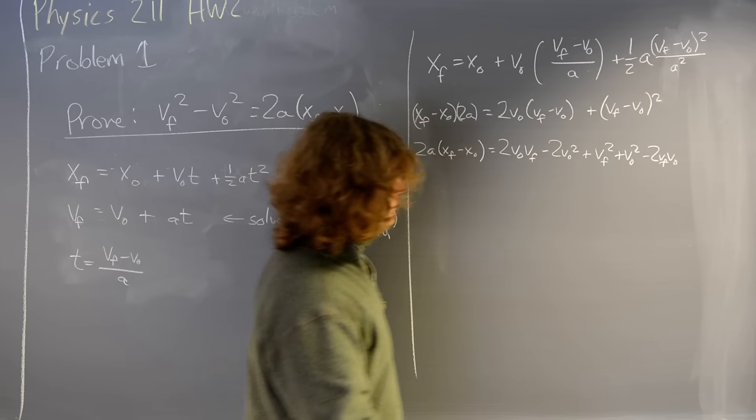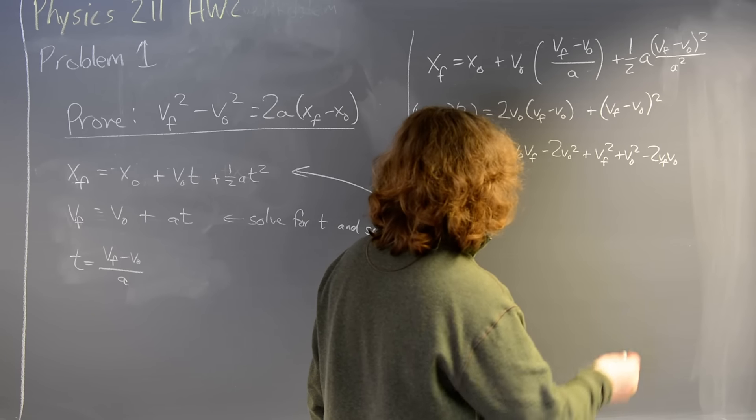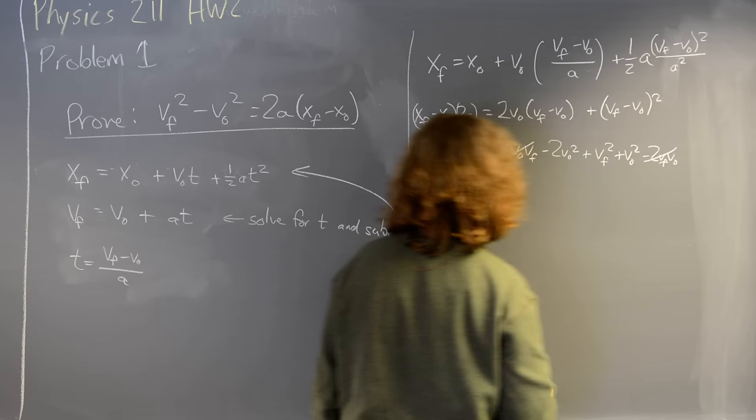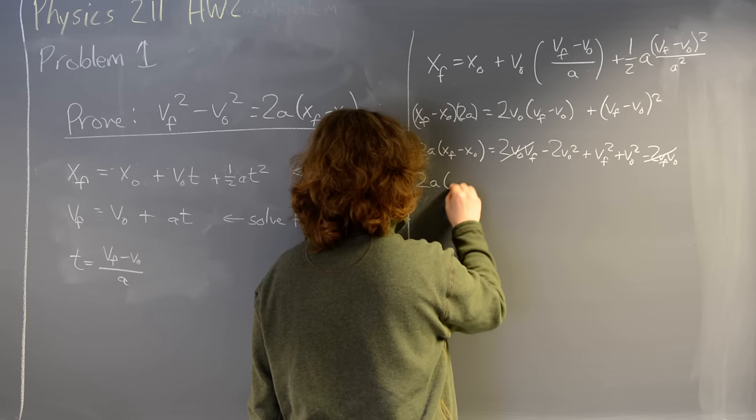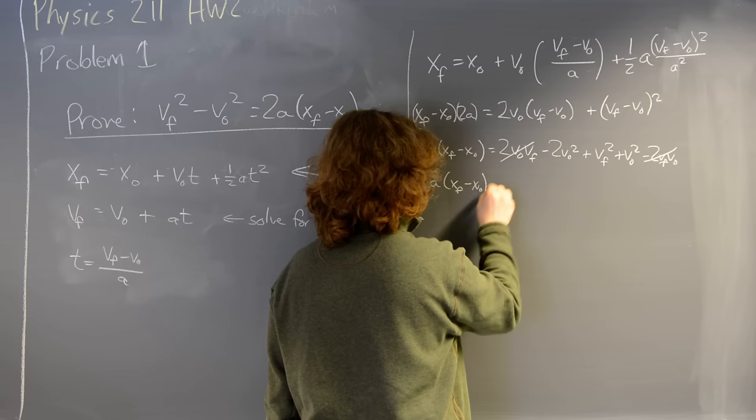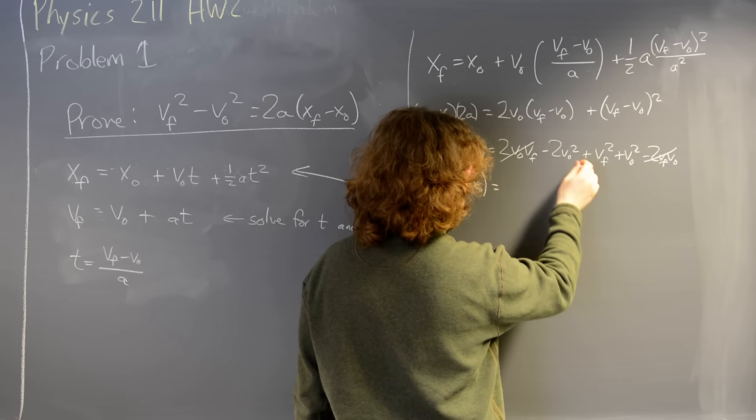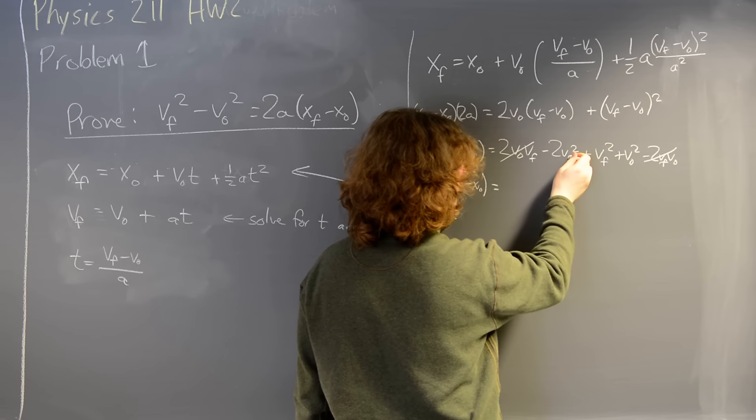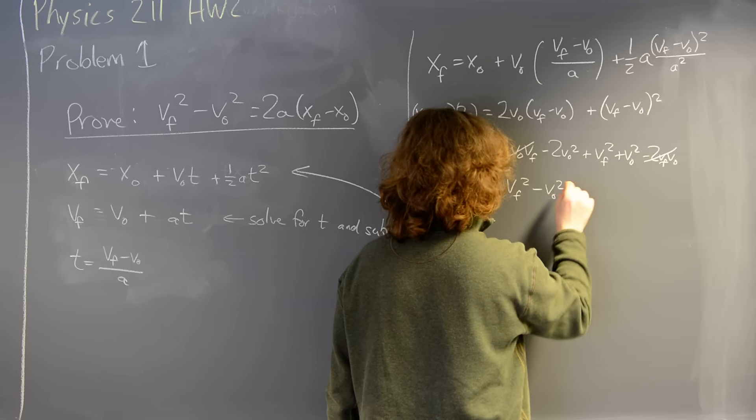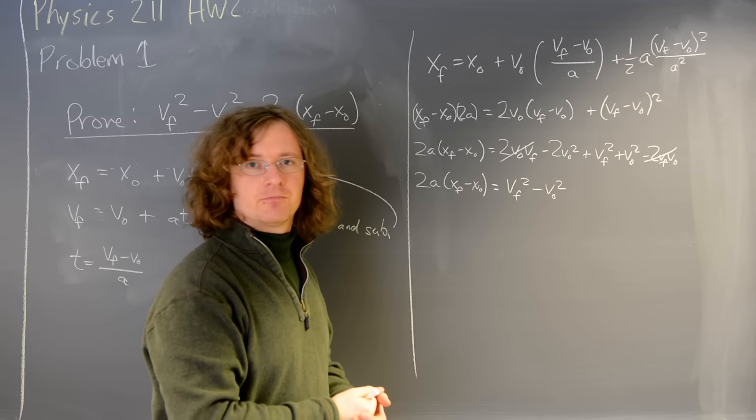So now I collect terms and cancel things. So I notice that this cancels with this, and I have 2a times xf minus x0 equals, let's see, I've got plus v0 squared minus 2v0 squared. So this gives me vf squared minus v0 squared. And this is what was to be proven. So that's problem one.